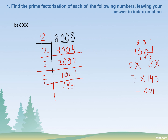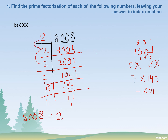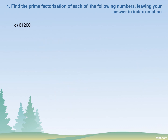We try 11 — 143 is not divisible by 11. We try 13: yes, 13 divides 143. 13 times 11 equals 143, and 11 is a prime number. So writing 8008 in index notation: 2 appears 3 times so we write 2 cubed, multiplied by 7, multiplied by 13, multiplied by 11. That is the answer.